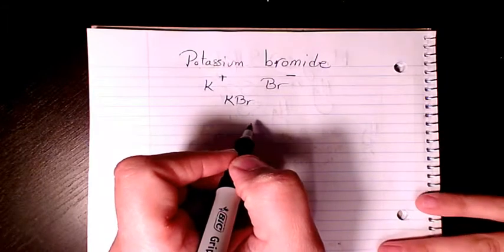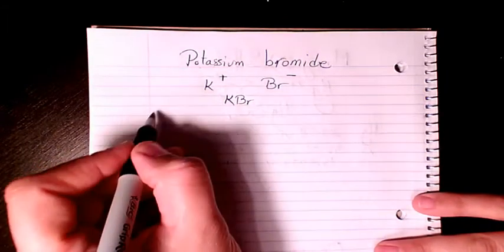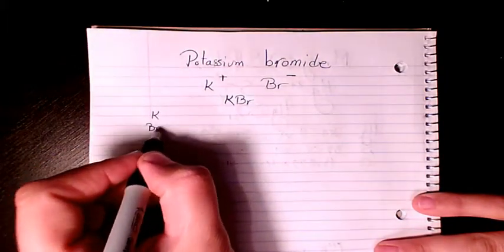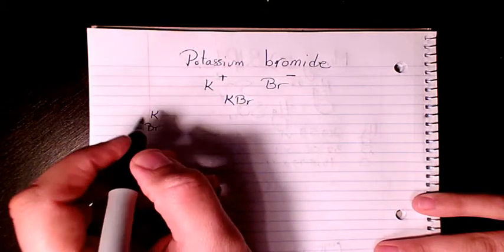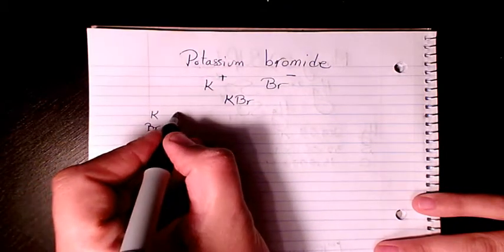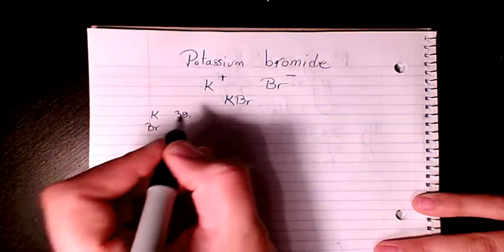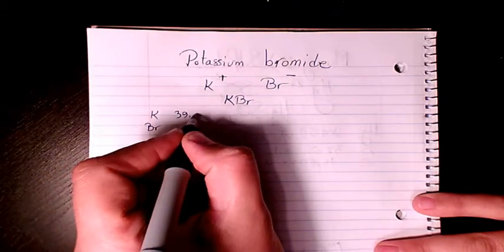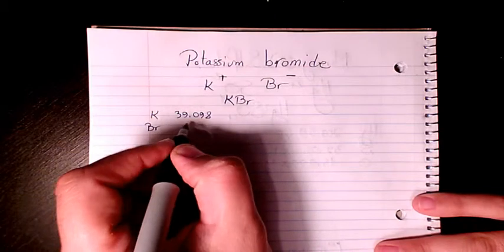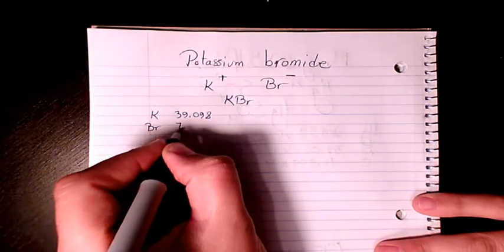molar mass or molecular weight, I need to list the elements, which are K and Br, and then find the atomic mass of each of them from the periodic table. For potassium we have 39.098, bromine is 79.904.